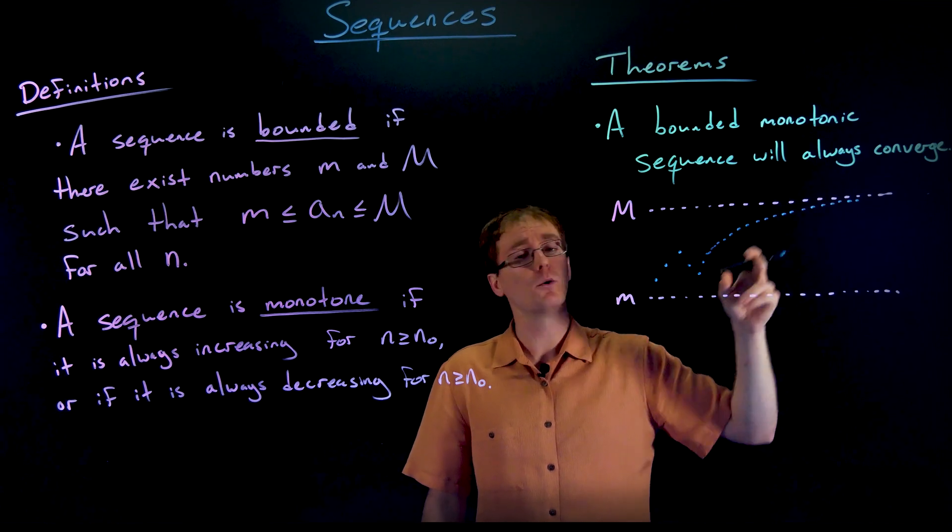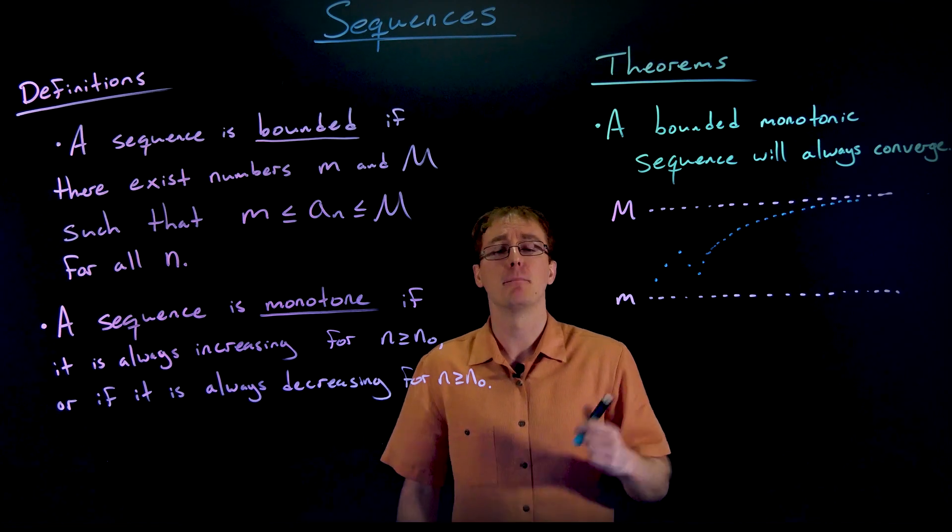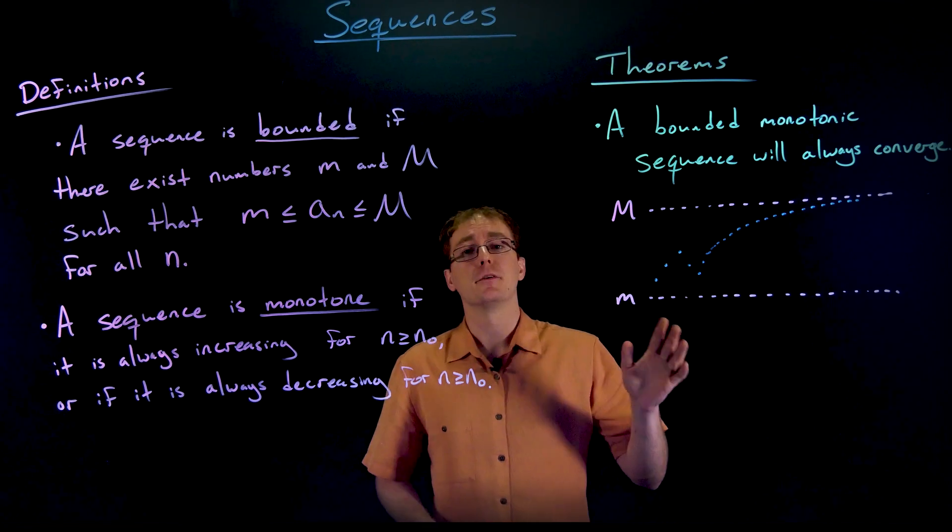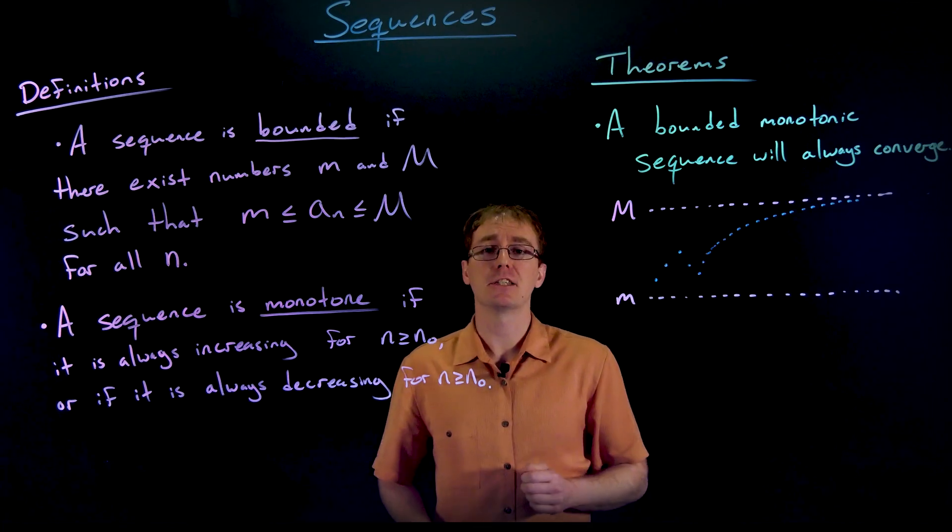That means our sequence must converge to whatever that maximum value may be. So remember, this theorem says that if we are both bounded and monotonic, then we are guaranteed convergence.